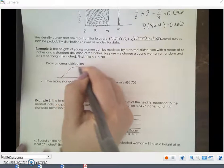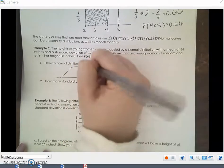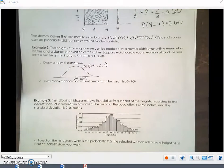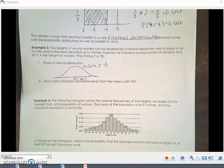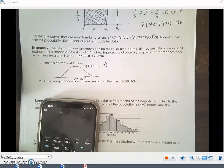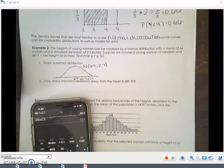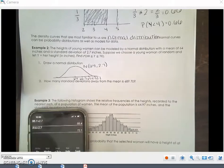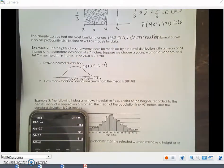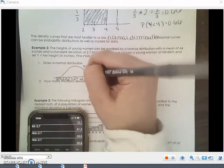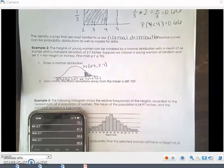So remember normal distribution looks like this. It's normal with a mean of 64 and a standard deviation of 2.7. So 64, 66.7, 69.4 plus 2.7, 72.1 would be 3 standard deviations. And then we go backwards. 64 minus 2.7, 61.3 minus 2.7, 58.6 minus 2.7, 55.9. So we want the distribution between 68 and 70. So it would be here and here. We want that value right there.